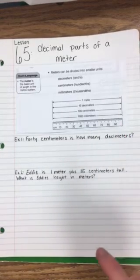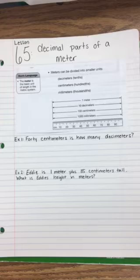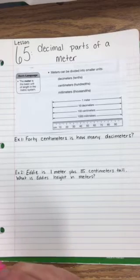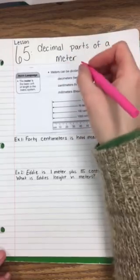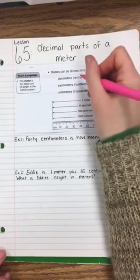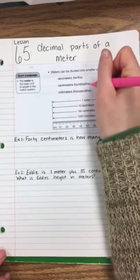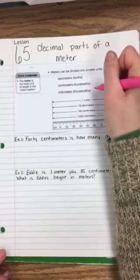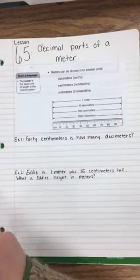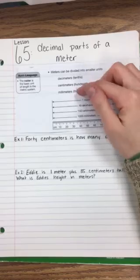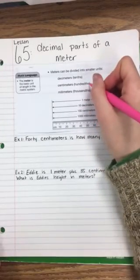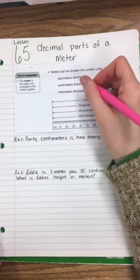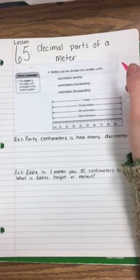A decimeter is one tenth of a meter. So for these you divide: one meter divided by ten equals decimeters, divided by ten again is centimeters, and divided by ten again is millimeters. If you go backwards you multiply, so millimeters times ten is centimeters, times ten is decimeters, and times ten is one meter.